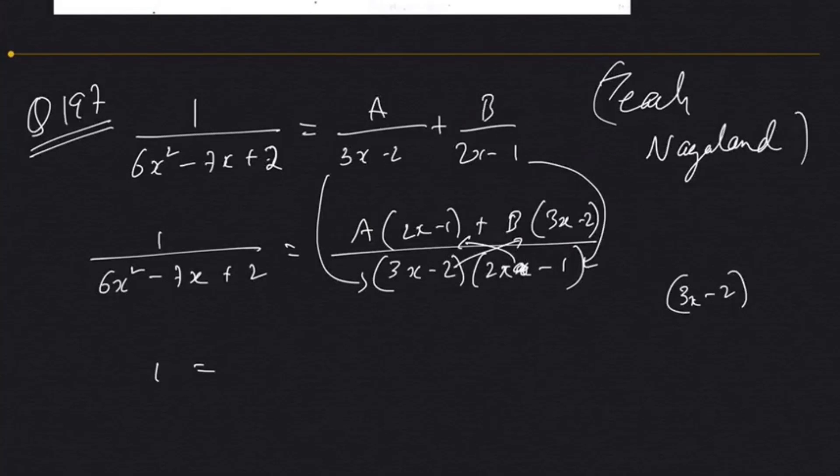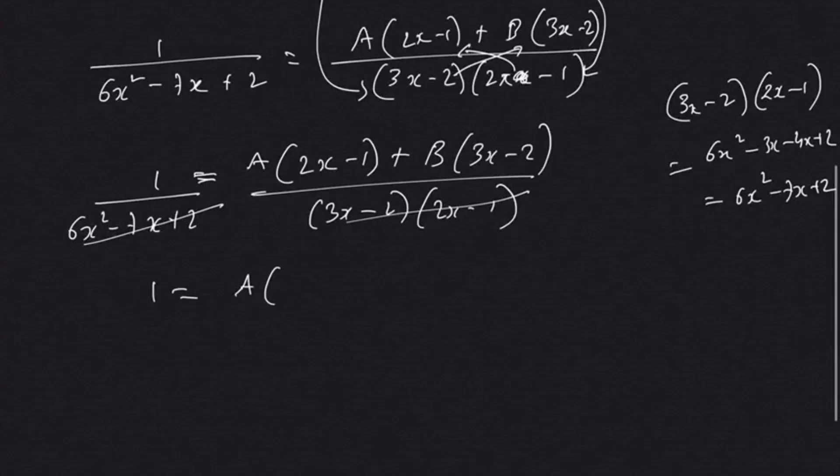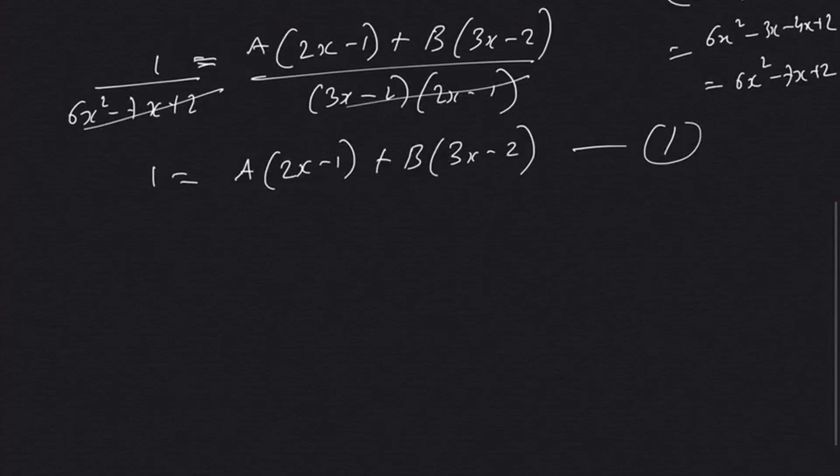Whenever you get these questions on partial fractions, if we multiply: 6x² - 3x - 4x + 2 equals 6x² - 7x + 2, the denominators are equal. We can just write one more step: the denominators (3x - 2)(2x - 1) are the same values, so they cancel. So we have A(2x - 1) + B(3x - 2). Now there are ways to solve this question, and this is one of the best ways that I prefer.